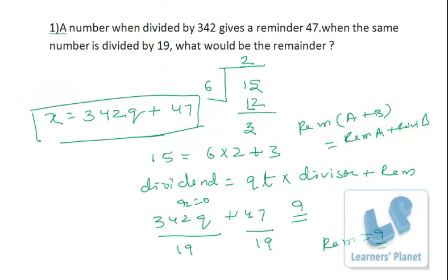The important things to learn here are: how do we represent a number in terms of quotient, divisor, and remainder, and what is the relationship among dividend, quotient, divisor, and remainder. That is this relationship.